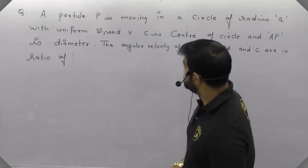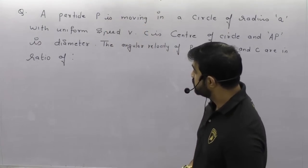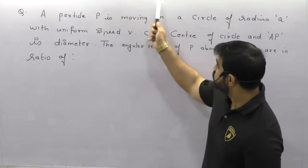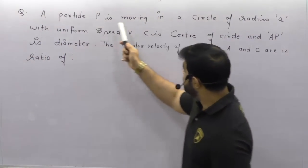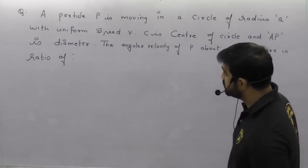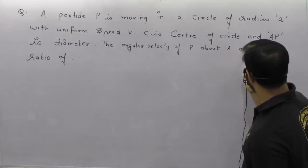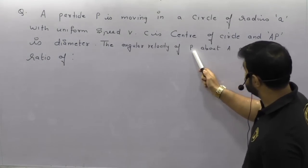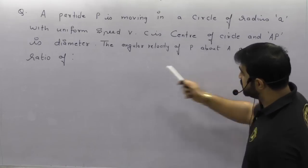We are going to start with the MHTCT series of circular motion right now today. We'll be discussing some brain teasing questions of circular motion. First question: a particle P is moving in a circle of radius A with a uniform speed V. C is the center of the circle and AP is the diameter. The angular velocity of P about A and C are in the ratio of?